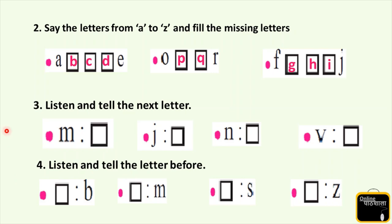Next question: listen and tell the next letter. Tell me what will come after N? Yes, it's O. M, N - what will come after J? It's K. J, K. What will come after N? M, N, O. Very good. And next is V - what will come after V? It's W.